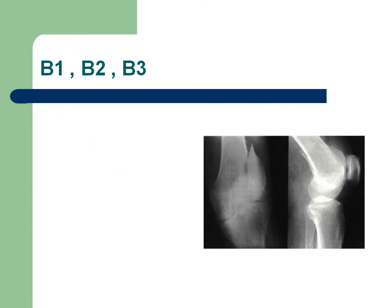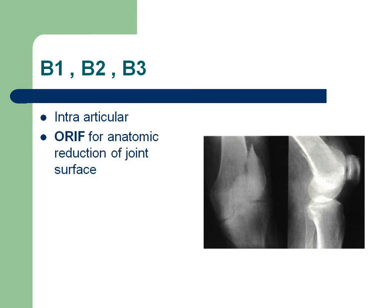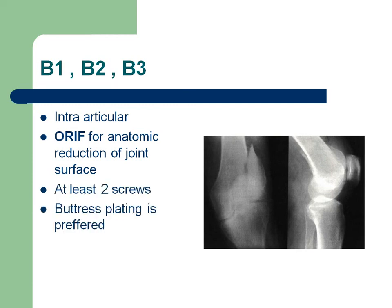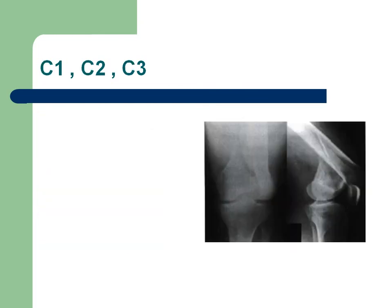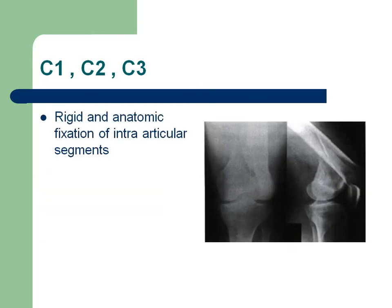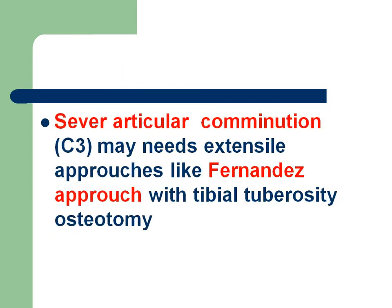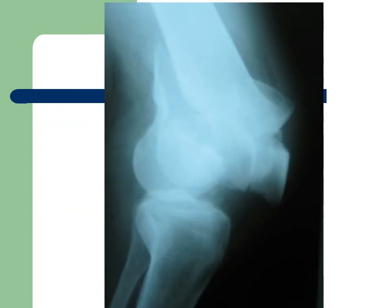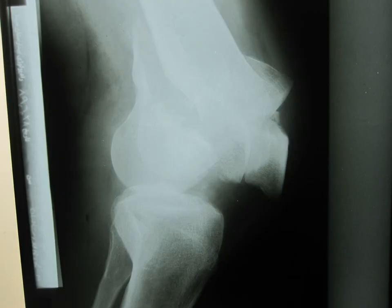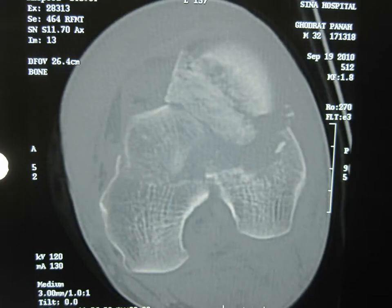For B1, B2, and B3 fractures, after reduction of the fragment, intra-articular fixation with at least two screws is required. For C1 and C2 — and especially C3 — a severe intra-articular fracture may require an extensile approach such as Fernandez's approach with tibial tuberosity osteotomy. I have an example of this type of fracture from my ward. CT scan in addition to AP and lateral X-ray helps assess the comminution.